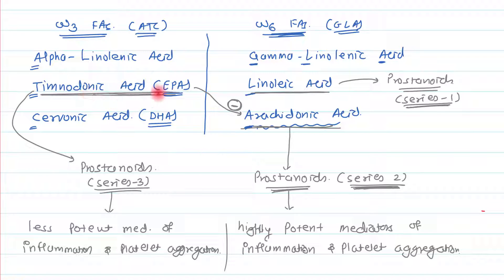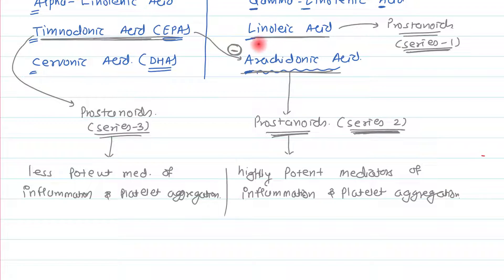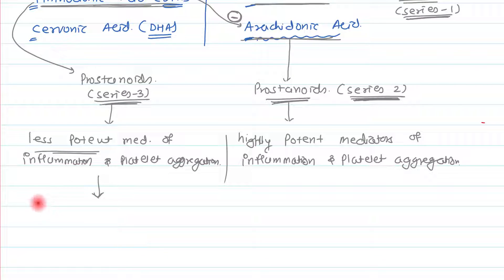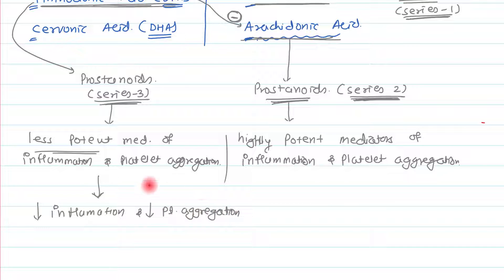Timodonic acid, a member of the omega-3 fatty acids, carries out two mechanisms. First, it inhibits the release of arachidonic acid, so the highly potent series-2 prostanoids are not produced. Second, timodonic acid itself gives rise to series-3 prostanoids which are less potent. Ultimately, omega-3 fatty acids decrease inflammation and decrease platelet aggregation.